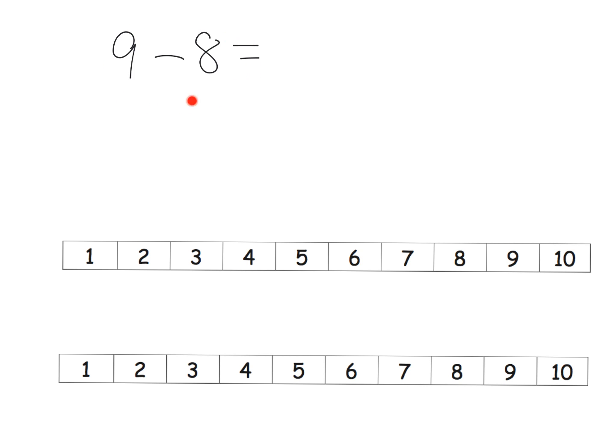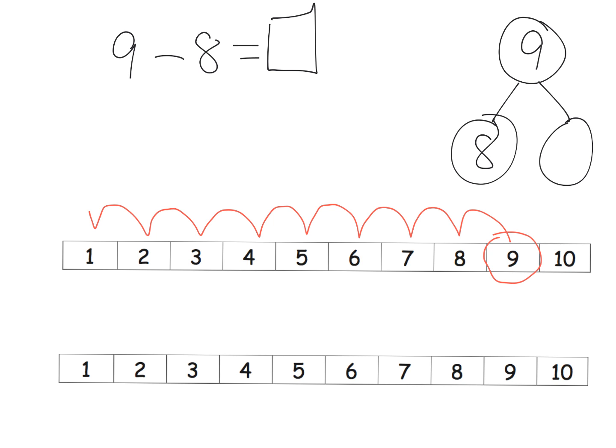So here we've got 9 minus 8 equals, and we're going to put our little box right here. The first thing we're going to do is we want to make sure our students remember that the number bond here would look like this. There's our classic number bond that would go with this subtraction problem. One way is students could start on the 9 and then count backwards 8: 1, 2, 3, 4, 5, 6, 7, 8. And once we've counted back 8, the answer is 1.